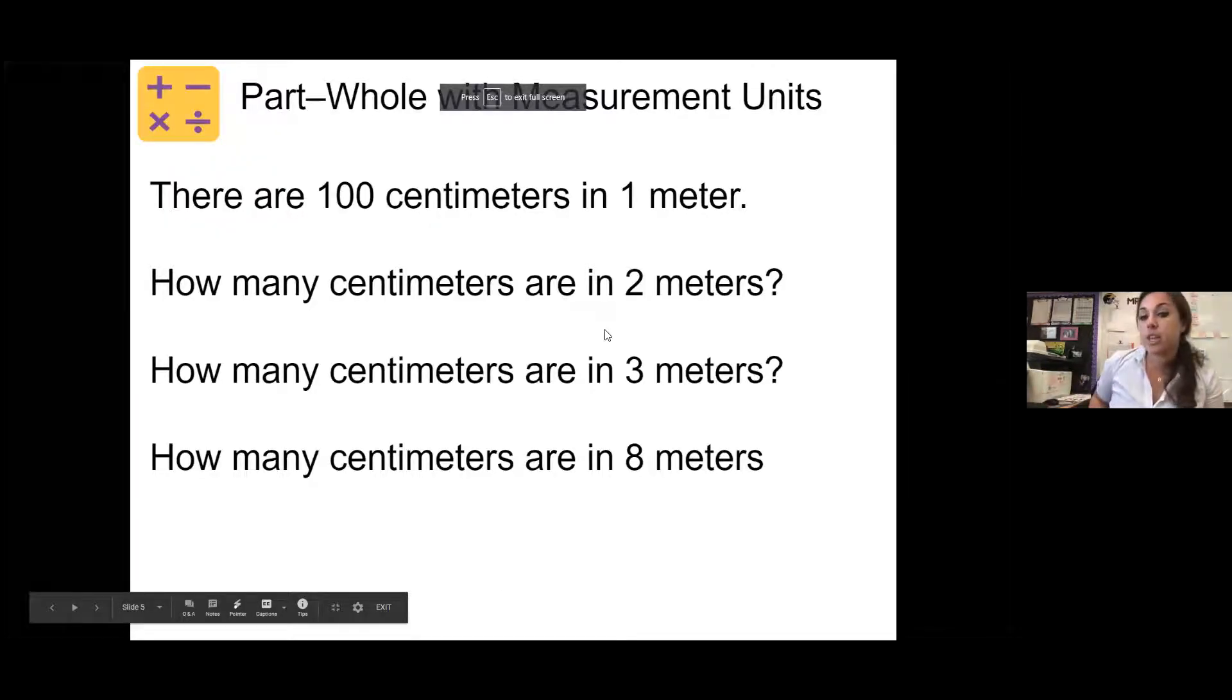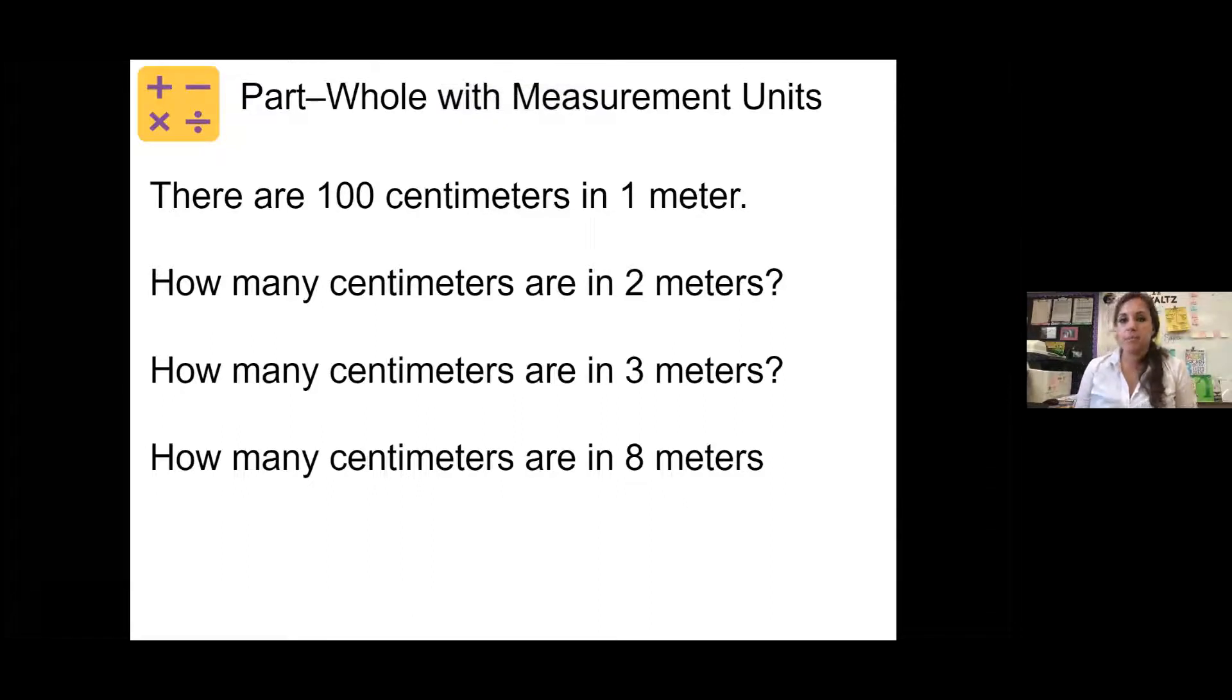Okay, so we know there are 100 centimeters in a meter. So my question is how many centimeters are in two meters. I'll give you a minute to write that on your whiteboard. So if 100 centimeters is in one meter, two meters is 200 centimeters.